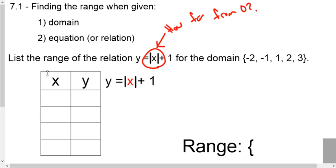So we still want to find the range of this relation or equation for this domain. And in this case, the domain that's given is negative 2, negative 1, 1, and 2. And let's just pretend like the 3 never existed, so that way we don't have as large of a problem there.